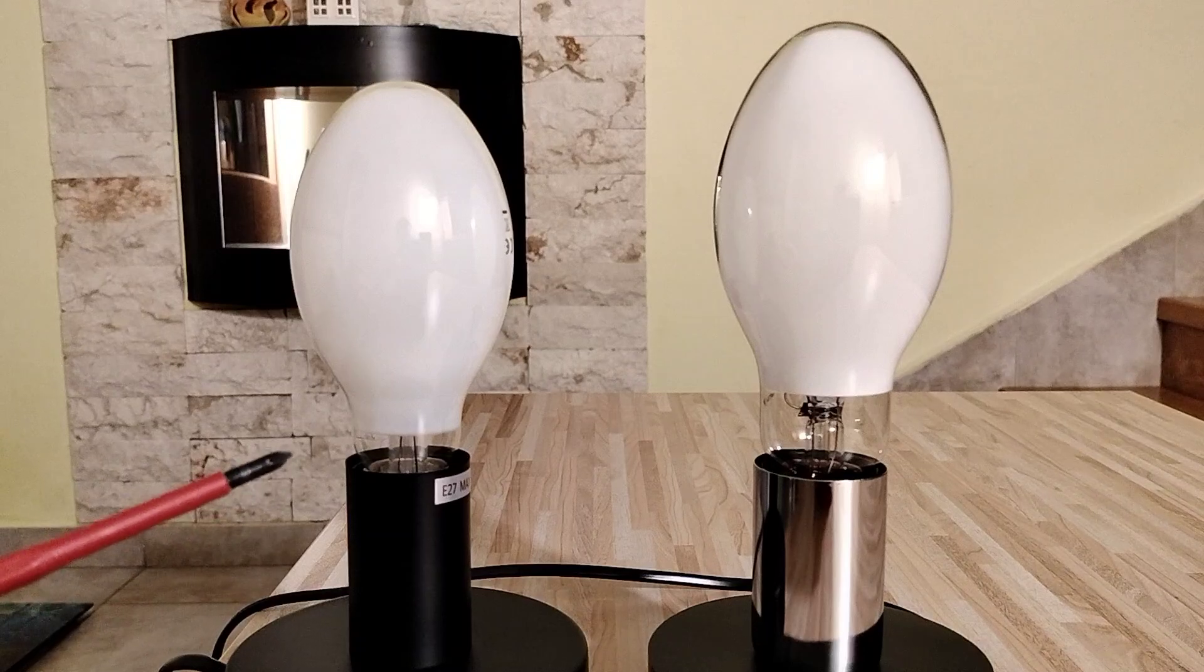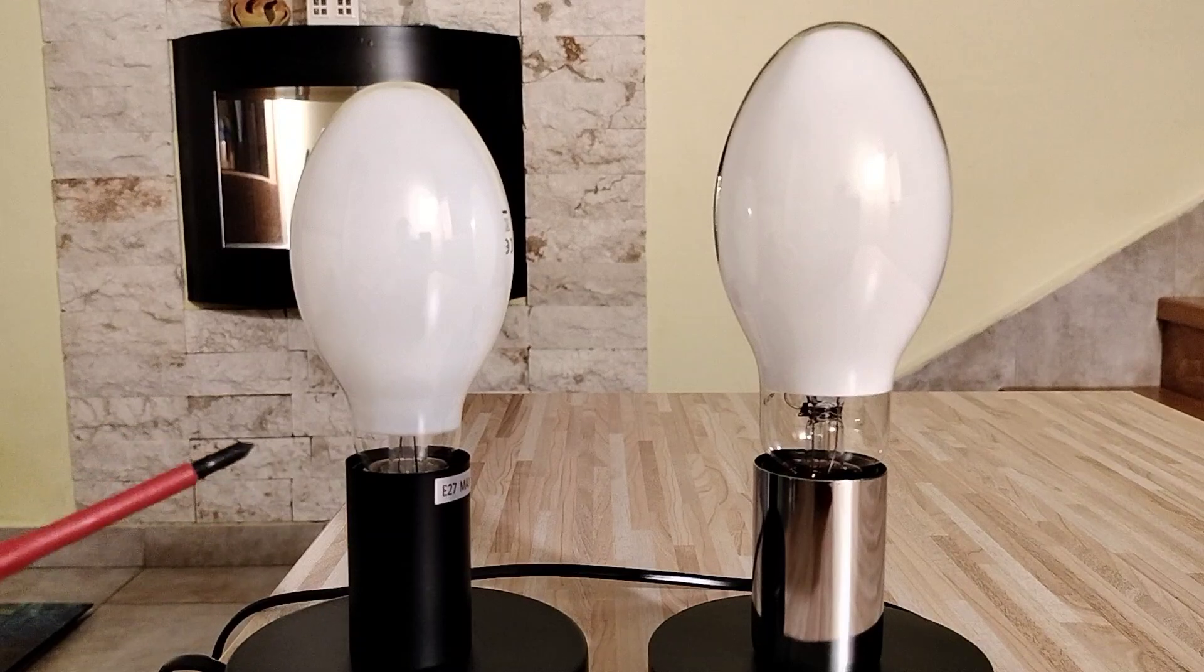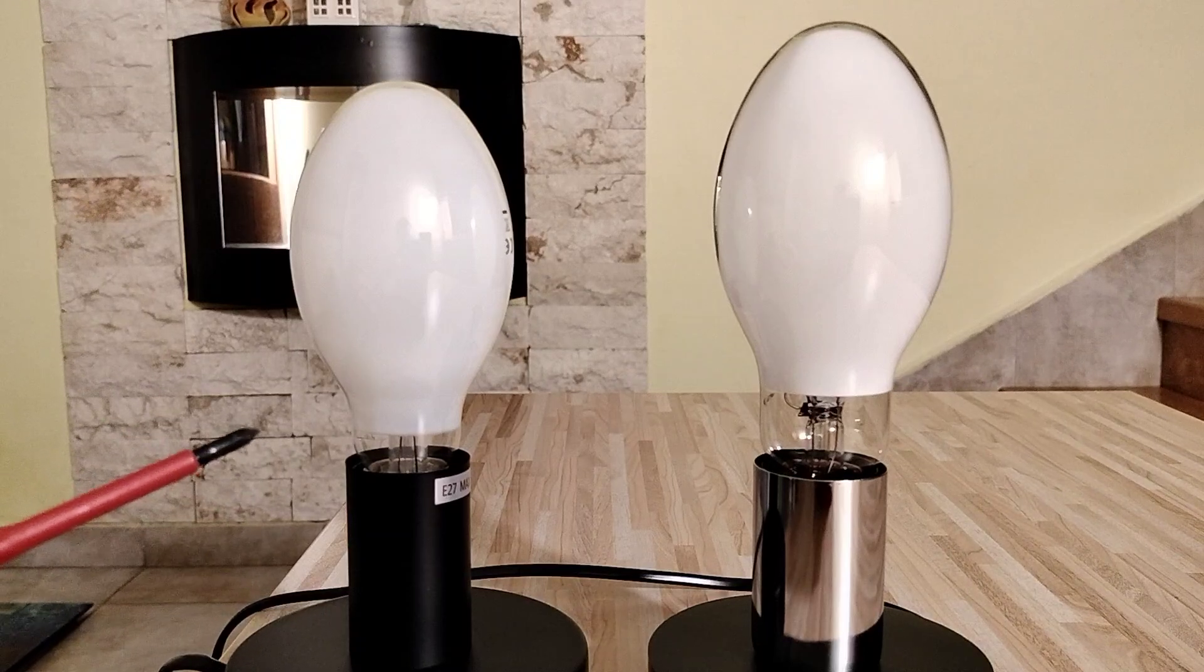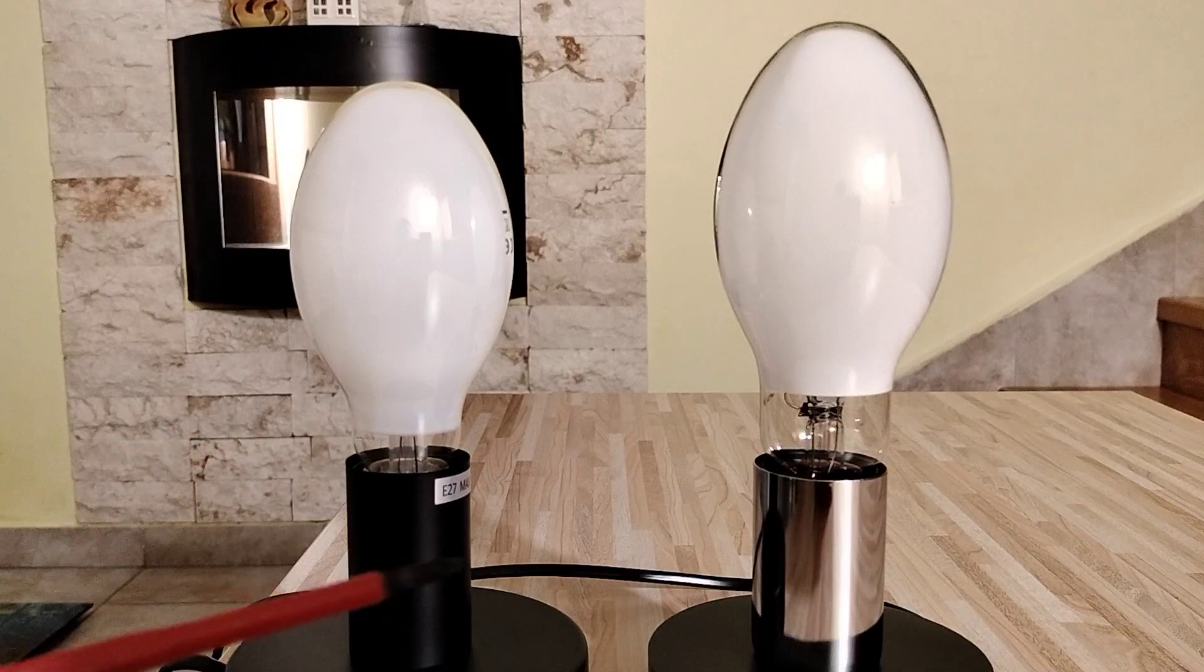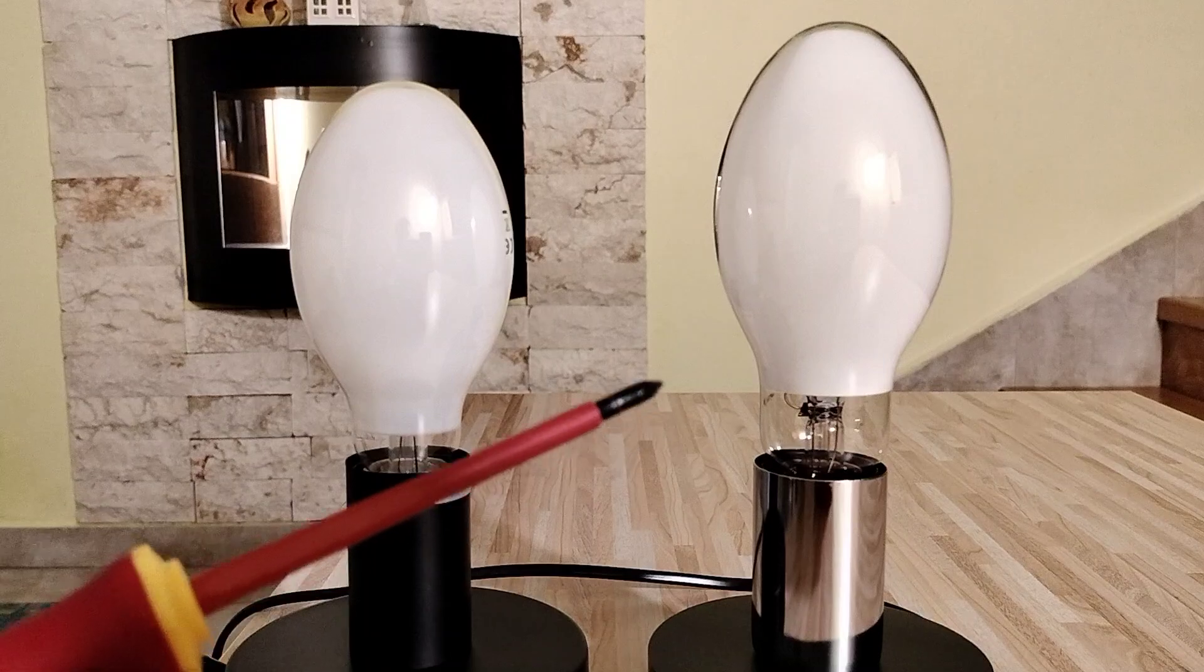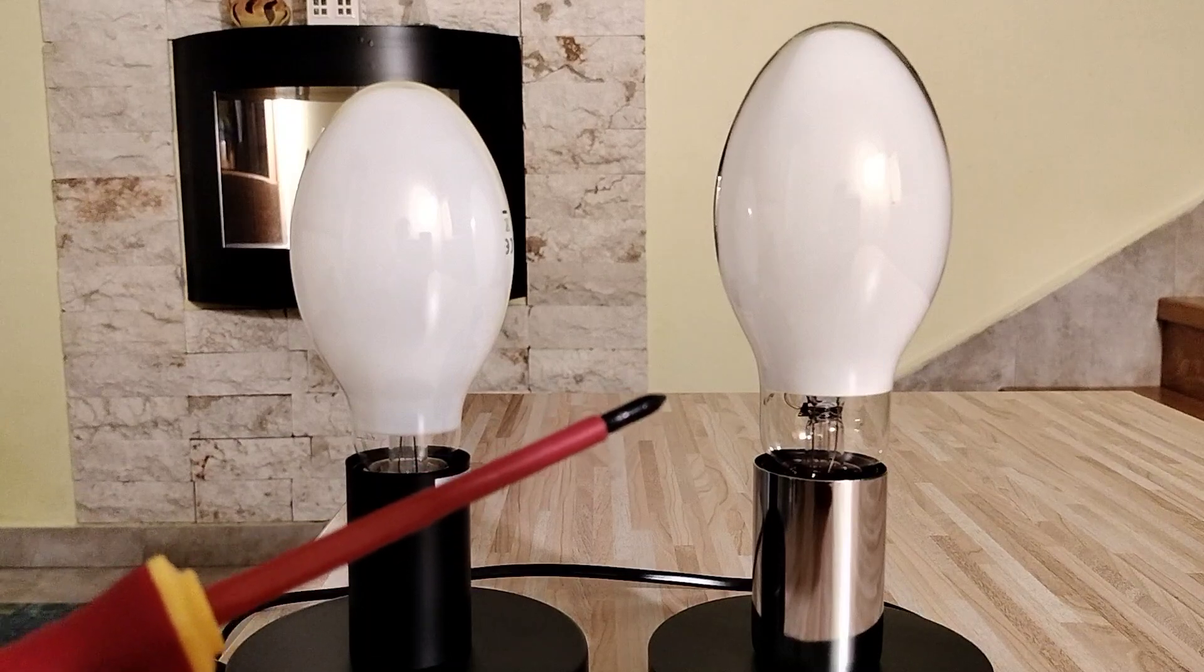This high-pressure sodium lamp has 5900 lumen and this mercury vapor lamp has only 3000 lumen.